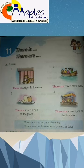There is a tiger — here there is only one, so we use 'there is a tiger.' In the case of the boat, there are three men — more than one — so we use 'there are three men in the boat.'